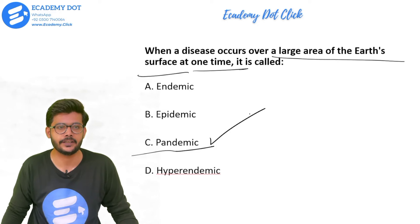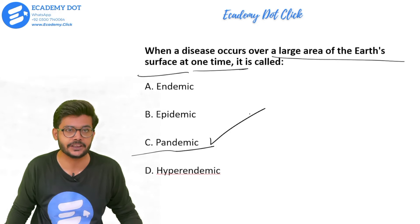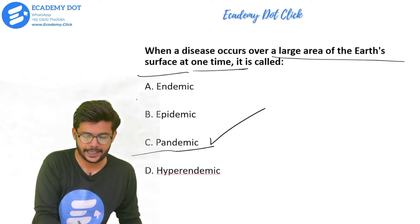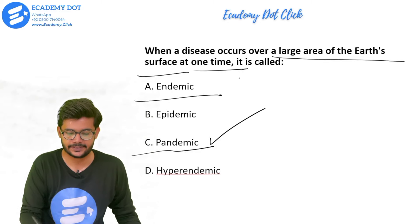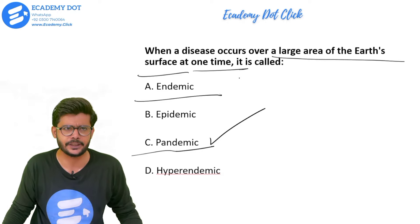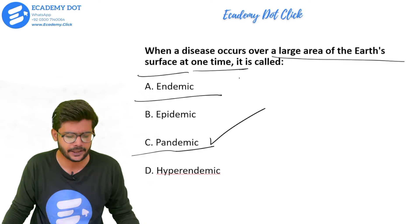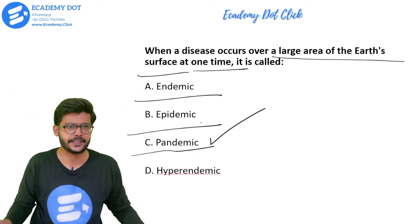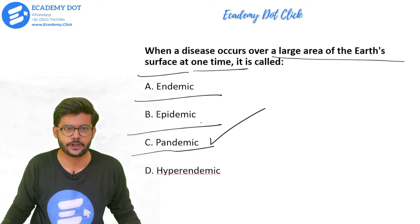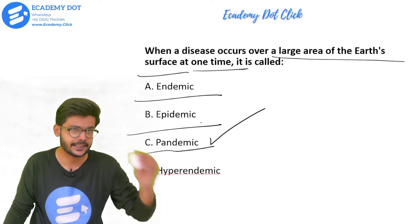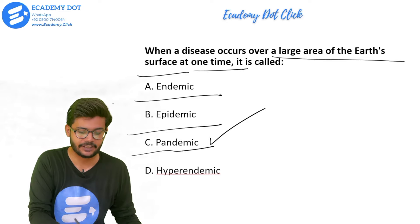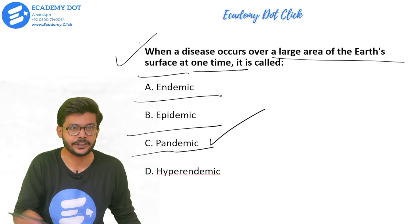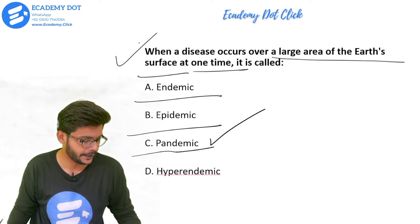For example, COVID-19 in 2019 was a pandemic — its disease prevalence occurred globally. Endemic refers to sudden prevalence of any disease in a particular community. Epidemic is the continuous spread of a disease at a certain geographical location or area. Note the difference between endemic, epidemic, and hyperendemic — this is a very important question.